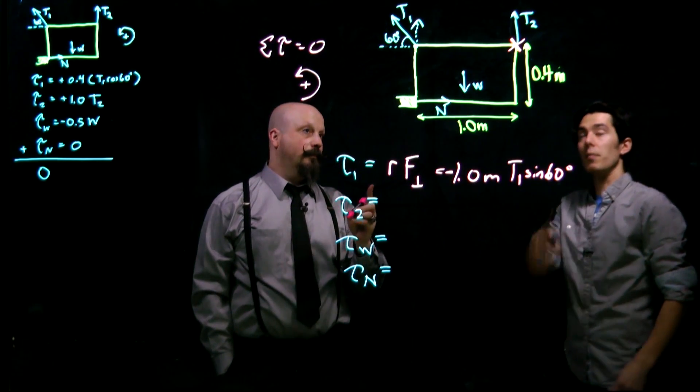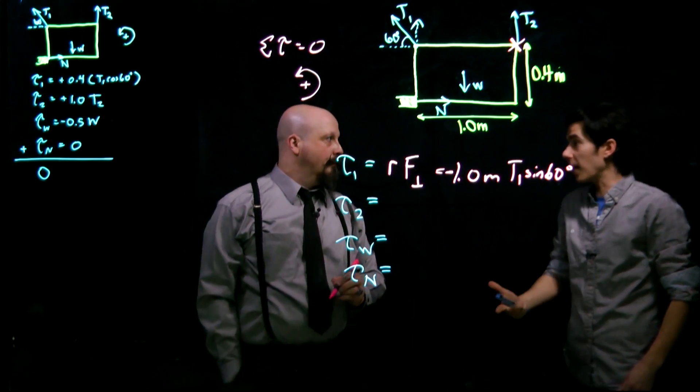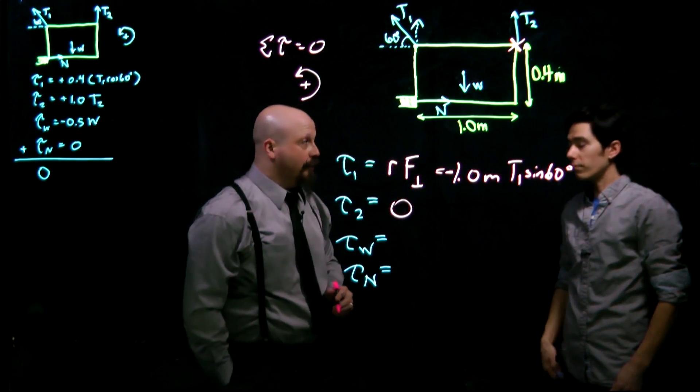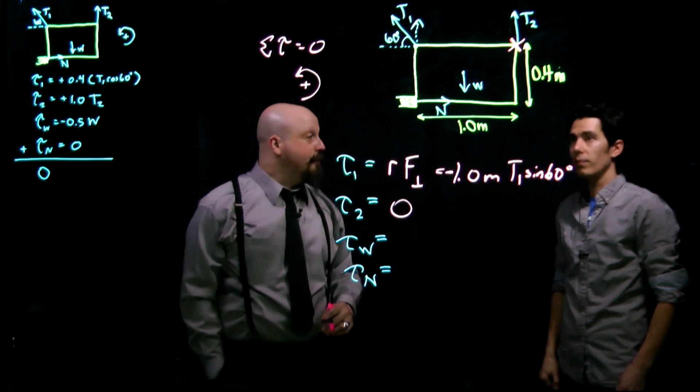For that example, T2, it's right on the pivot point, so again, that's a torque of zero. We have an R value that's equal to zero in either of the two techniques that we use.